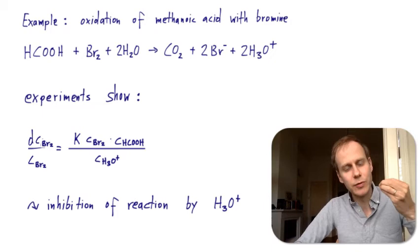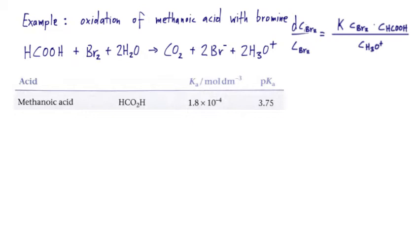From our acid-base lecture, for methanoic acid — a weak acid — the acid dissociation constant Ka is 1.8 × 10⁻⁴. It has a pKa value of 3.75. Remember, the pKa is the pH value at which 50% of your acid is dissociated. Below the pKa value, most of the acid is in its neutral, protonated form, while above that pH it exists in its dissociated form.